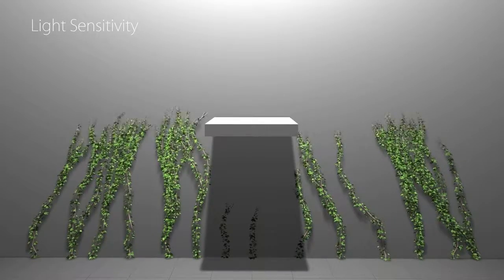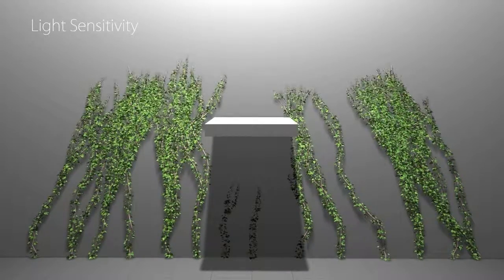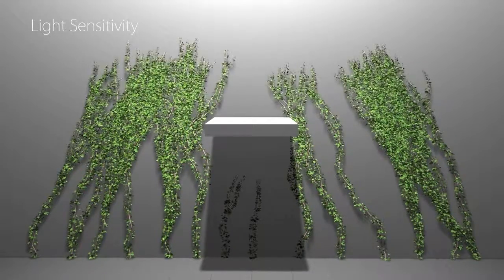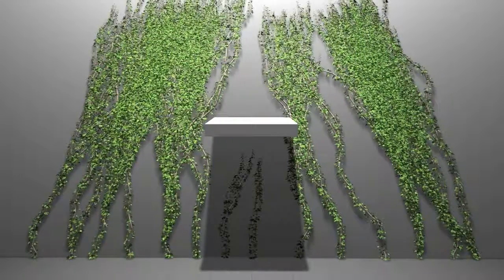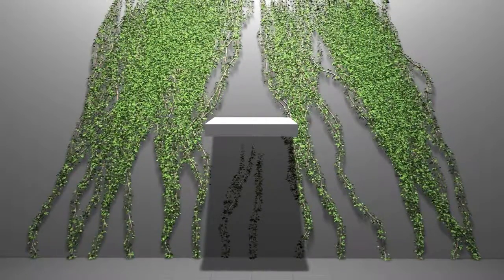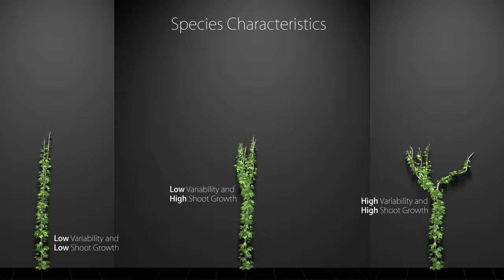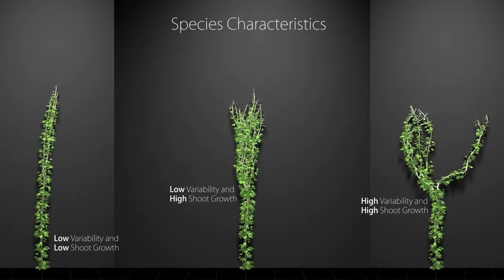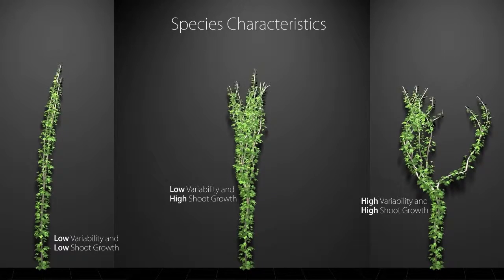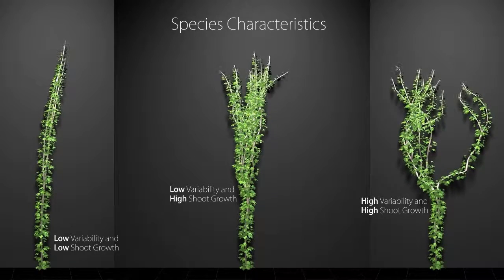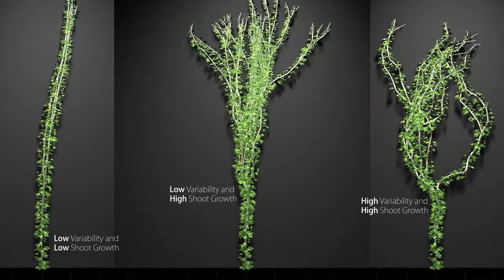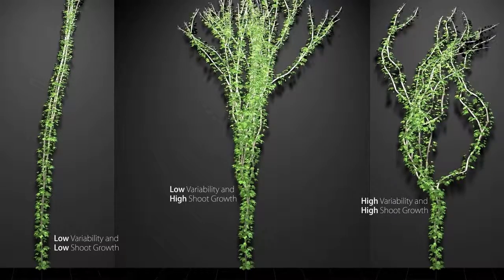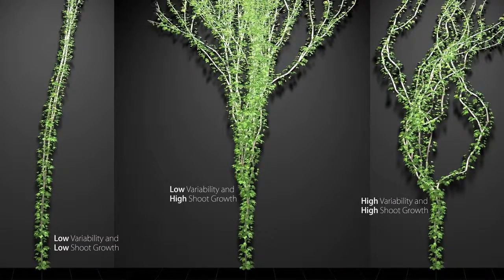In particular, we model light sensitivity, the influence of gravity, and adaptation to obstacles. Different species can be modeled by changing growth parameters within our framework, including the probability of shoot growth and the variability of branch direction.